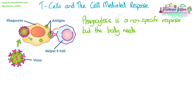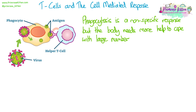Phagocytosis is a non-specific response, but the body often needs more help than just phagocytes randomly bumping into pathogens and destroying them. So if we have a large number of pathogens invading, and therefore a quite serious infection, we need to recruit more cells to help with this immune response.